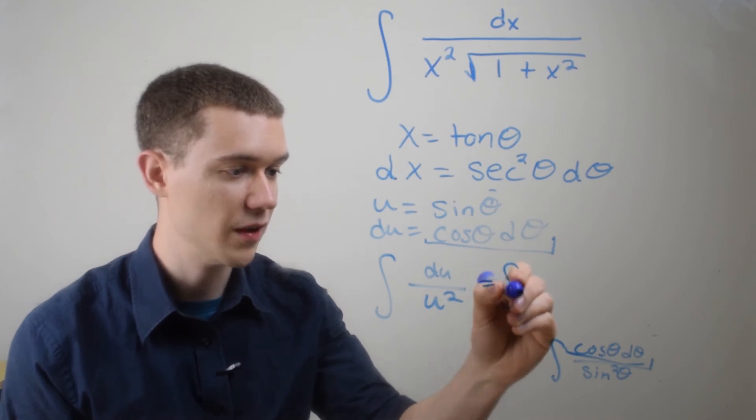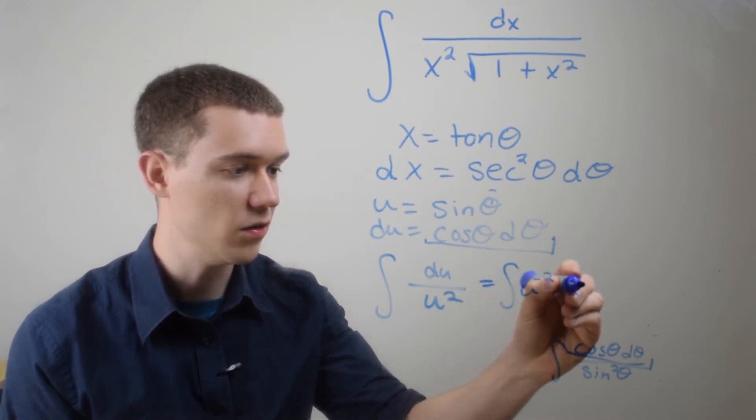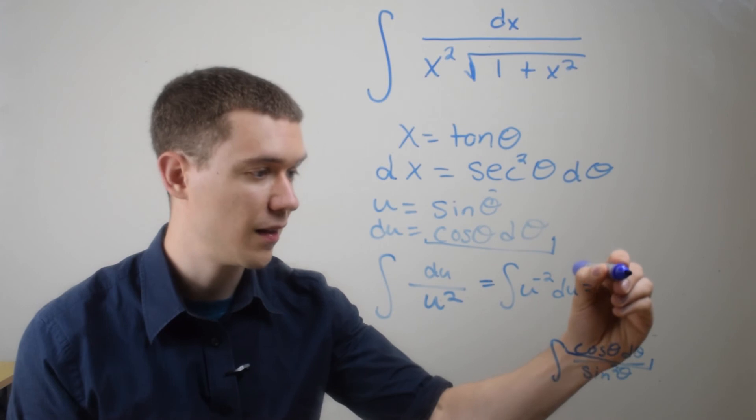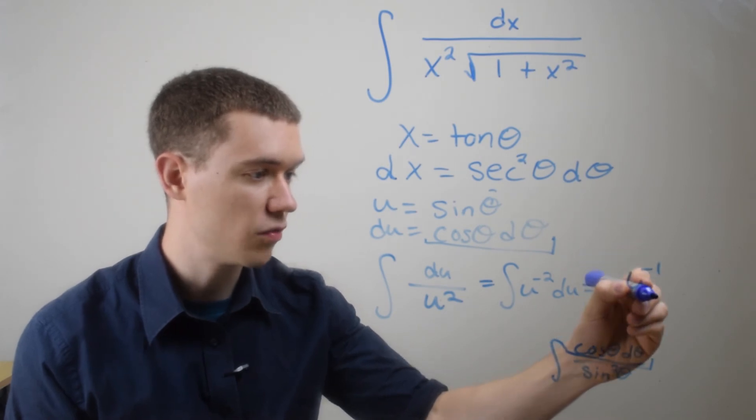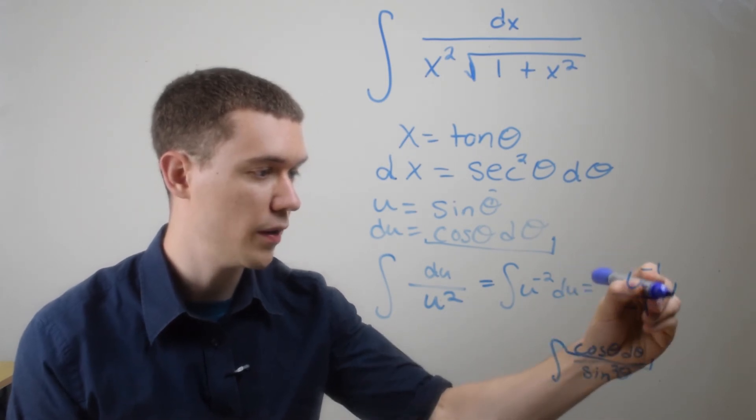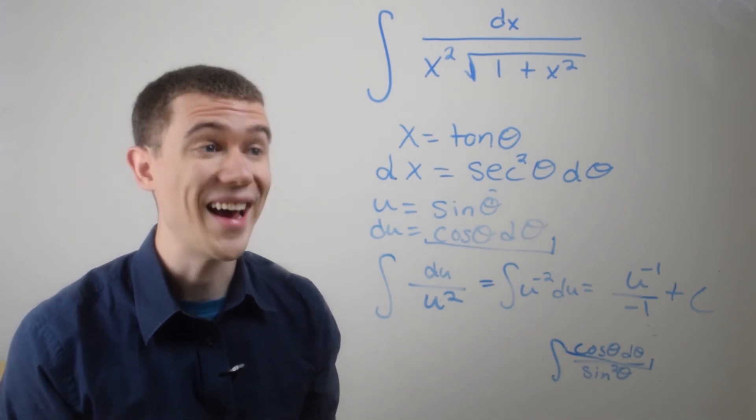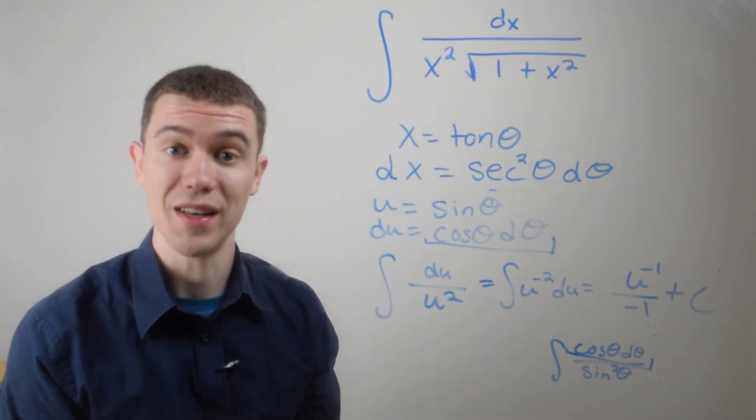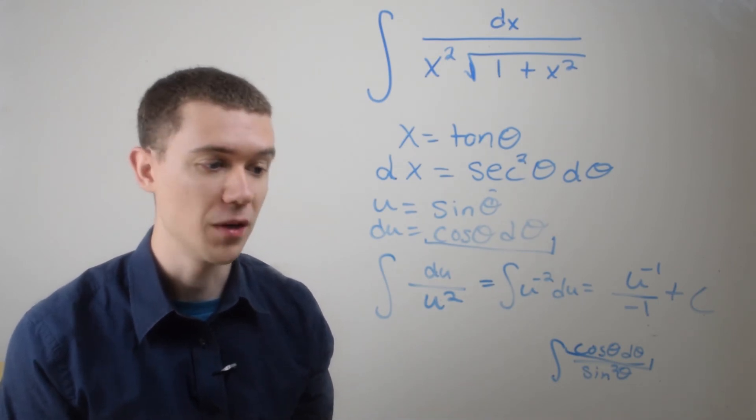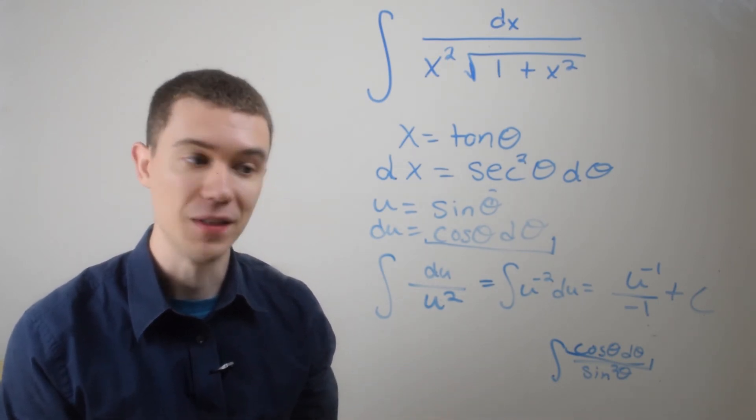And this is now an easy integral to solve. So this is just really u to the minus second du. And if I integrate that, that'll just be u to the minus first divided by minus one plus c. Now we're not done. We started with x's. I want to end with x's, right? I've got u's here. So I'm going to have to do some back substituting.